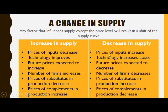The opposite factors will cause a decrease in supply: when the price of inputs increases, when technology increases cost, when future prices are expected to decrease, when the number of firms decreases, when the prices of substitutes in production increase, and when the prices of complements in production decrease. These will all cause a decrease in supply — in other words, a leftward shift of the supply curve.